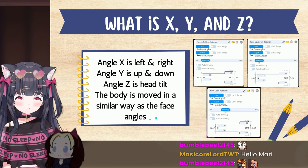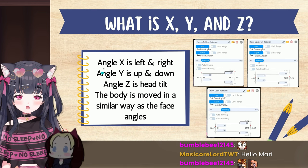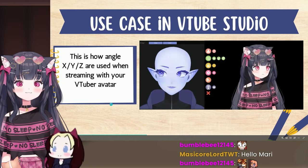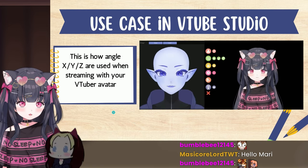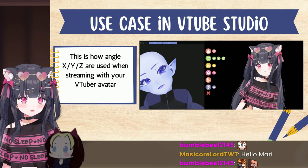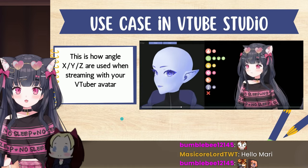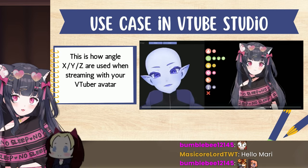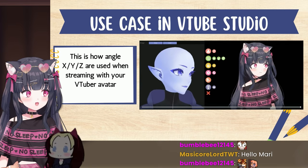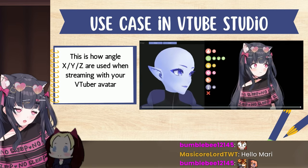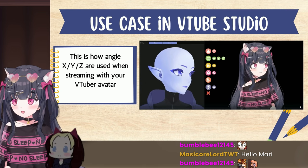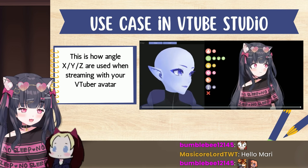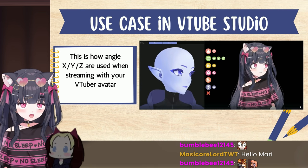Here's a demonstration: Angle X is left and right, Angle Y is up and down, and Angle Z is the head tilt. You can see how my body and head all move together at once because it's taking all the data from my face. These numbers in the input and output are the application determining where my face position is and how the model should react.